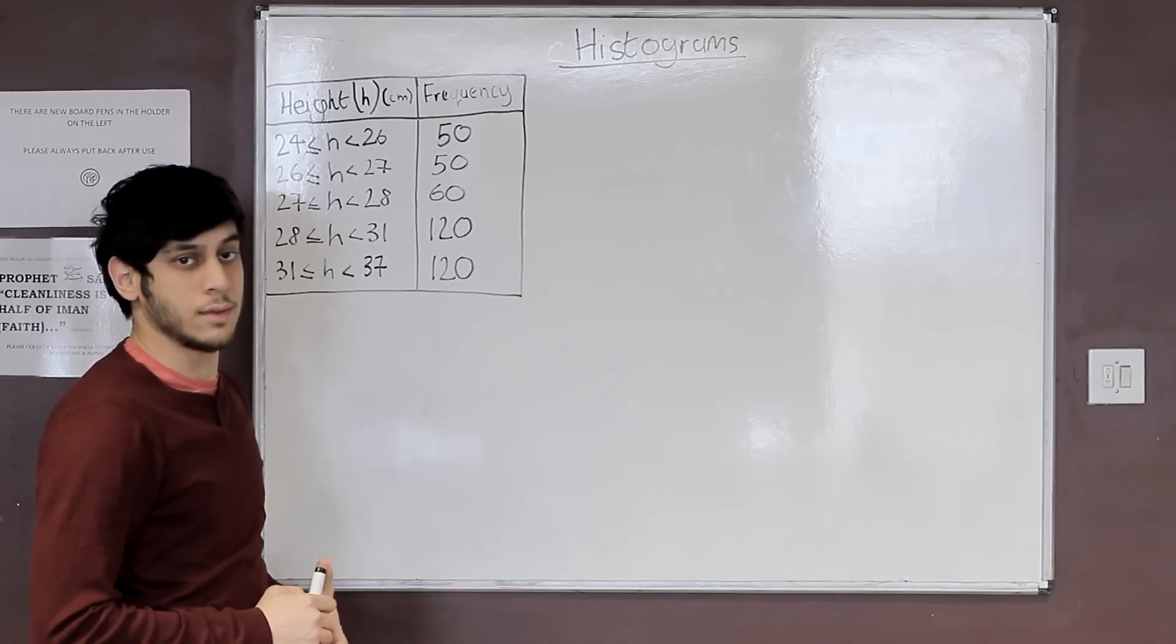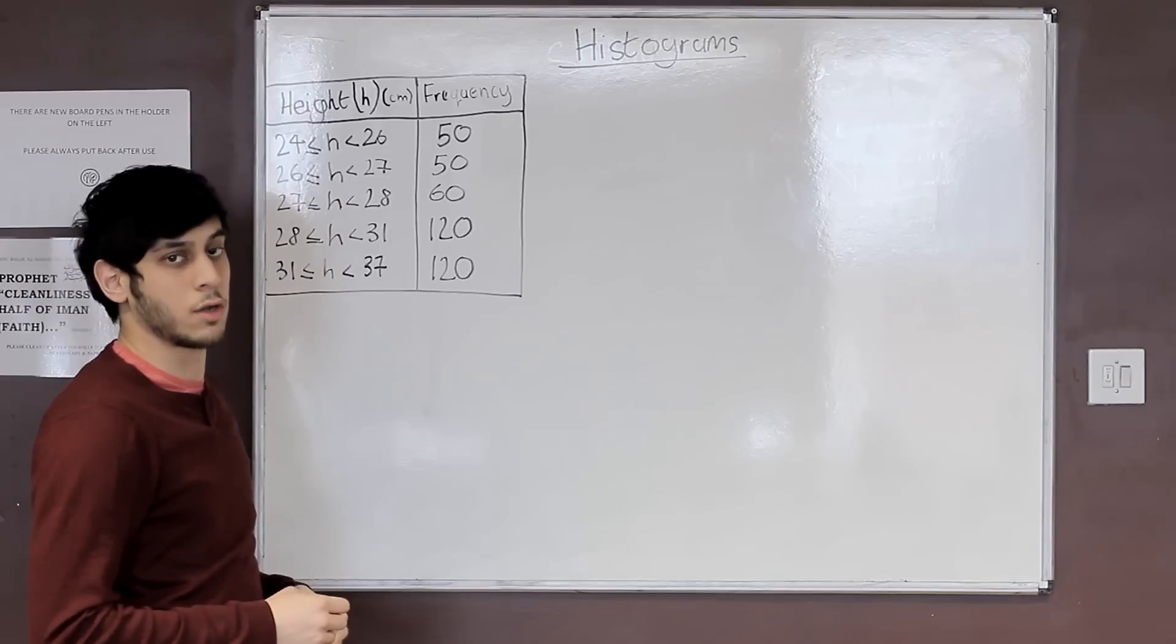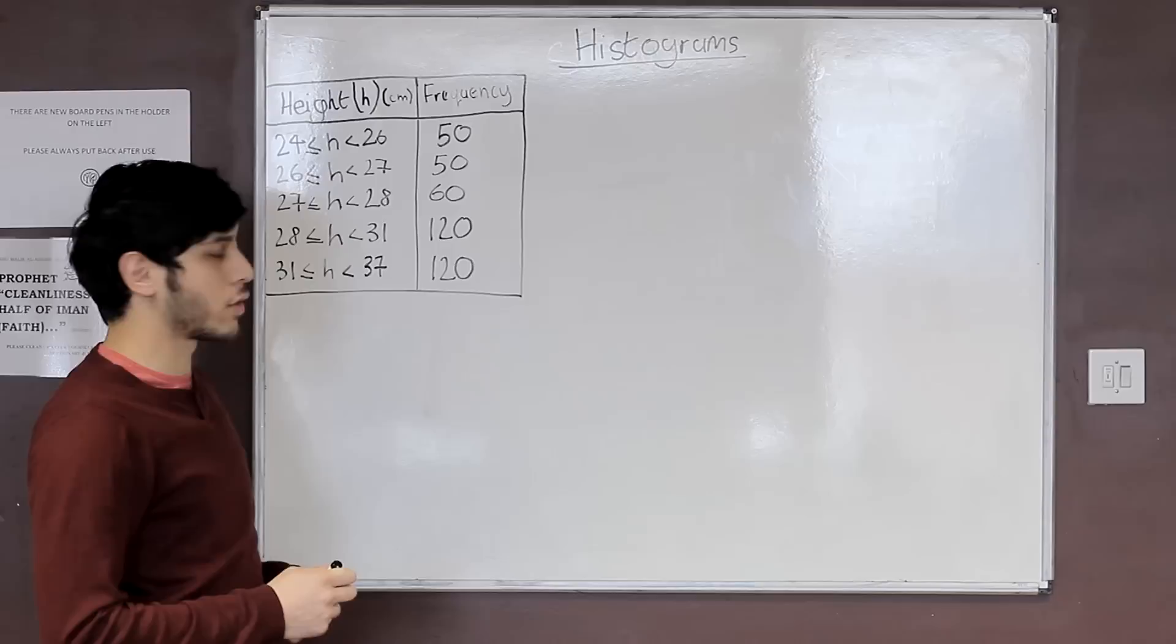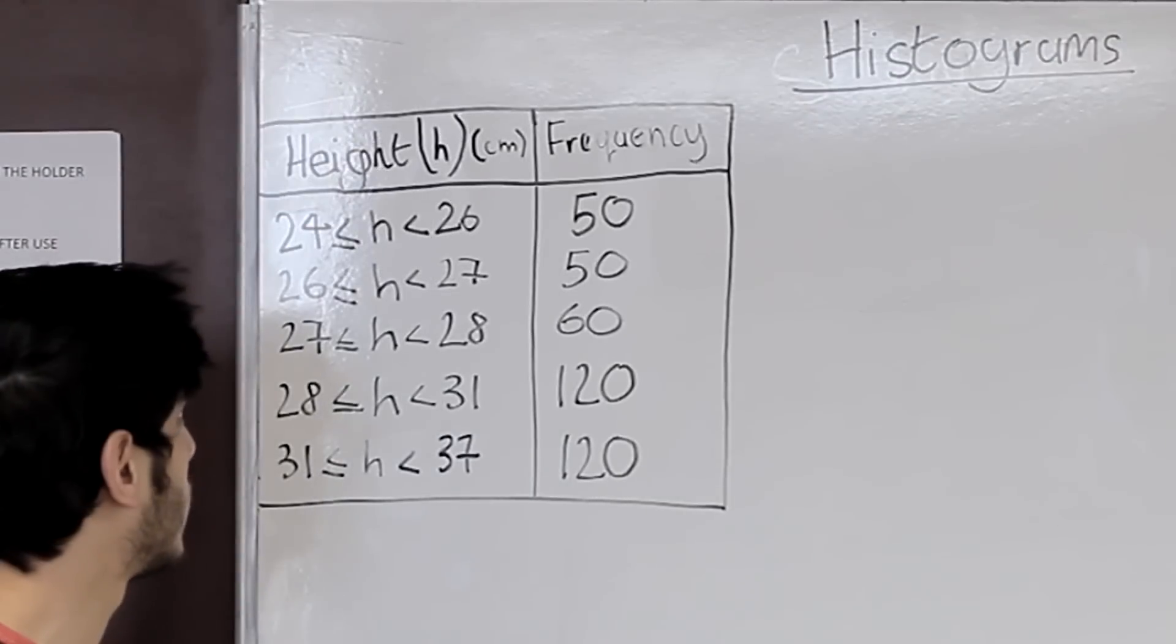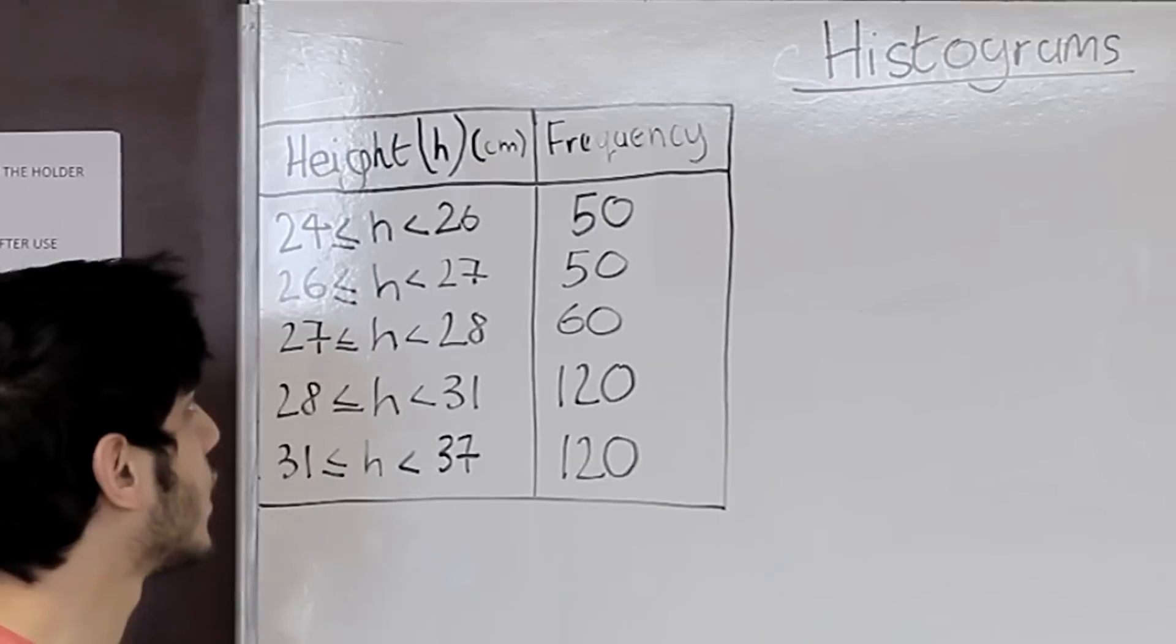First thing you should do for a histogram question is you have to find out your class width. To find out your class width you look at your class interval column and you look at the two numbers, so in our case it's 26 and 24 and you find the difference between the two.